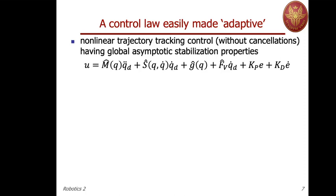People have tried to work with other control laws — in particular, one sharing global asymptotic tracking characteristics, made by replacing in some special parts of the control law the desired values rather than actual values. We have seen that this controller does not require cancellation of nonlinear terms; it leaves nonlinear and coupled dynamics in the control loop but has global asymptotic stabilization properties. This is the structure of the control law when we emphasize that we are using estimates for the dynamic coefficient — putting a hat on all dynamic terms.